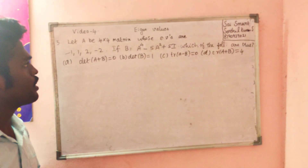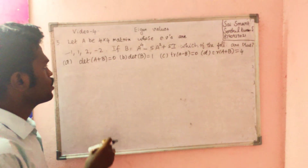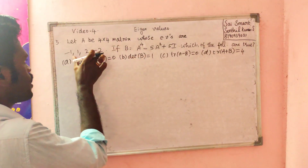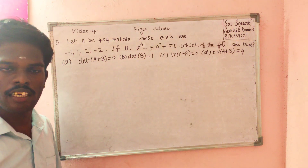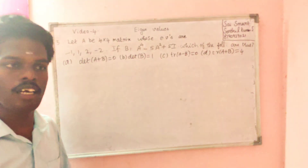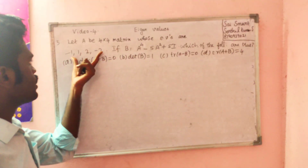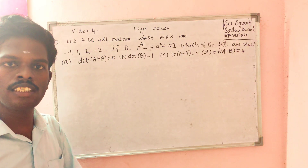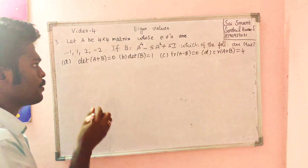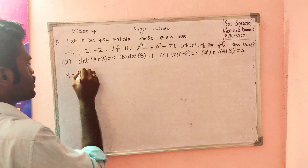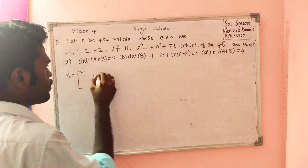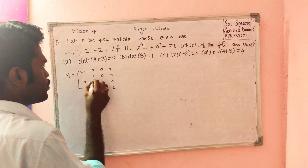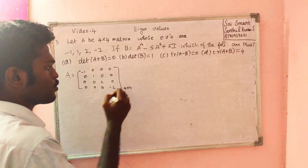Let A be a 4 by 4 matrix with eigenvalues -1, 1, 2, -2. The eigenvalues are distinct and the matrix is diagonalizable. Diagonalizable will be covered in the next class. Distinct eigenvalues are diagonalizable. So this matrix can be framed as a diagonal matrix with leading diagonal elements as eigenvalues. I have 4 eigenvalues, so it's a 4 by 4 frame.